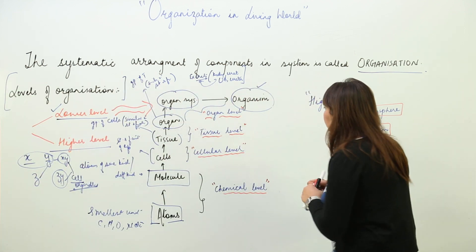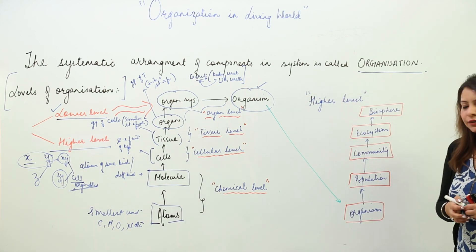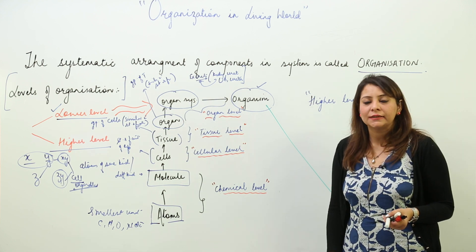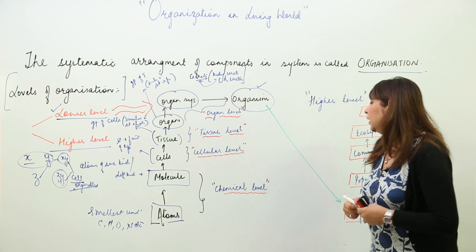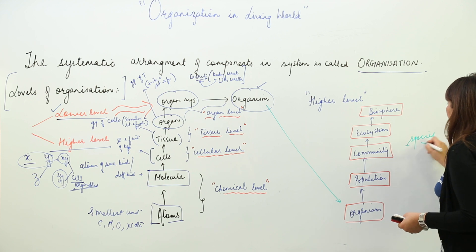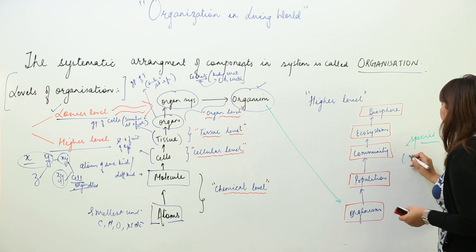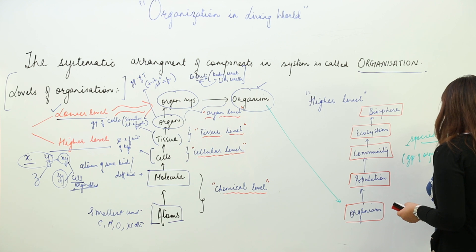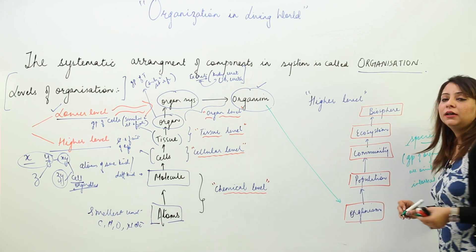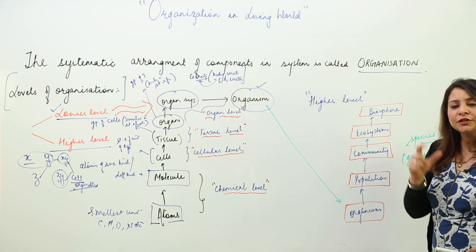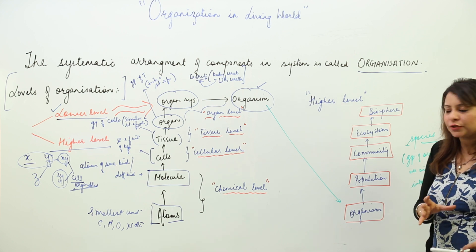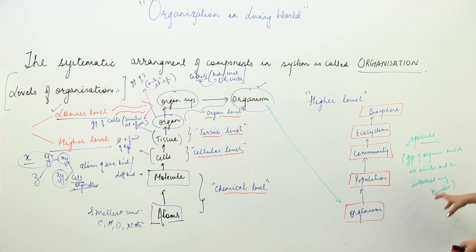Now coming to the higher level. Organisms give rise to a population, but all organisms are not similar — bacteria, elephants, and humans are all organisms but don't look the same. So we introduce the term species. Species is a group of organisms which are similar and can interbreed among themselves. Different species cannot interbreed — for example, an elephant and a sparrow cannot interbreed.